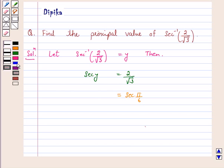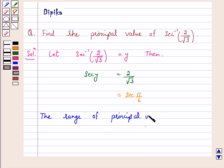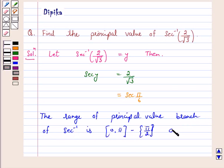From the key idea, we know that the range of the principal value branch of secant inverse is closed interval 0 to pi excluding pi by 2, and secant pi by 6 equals 2 by root 3.